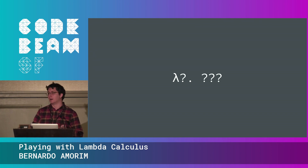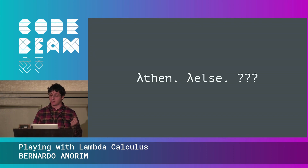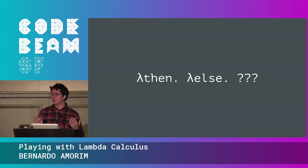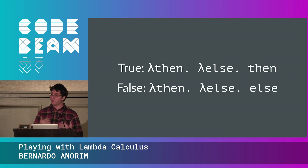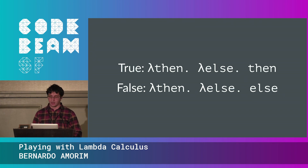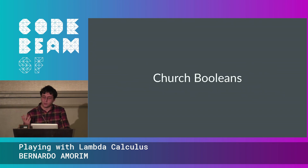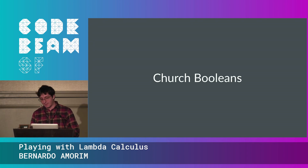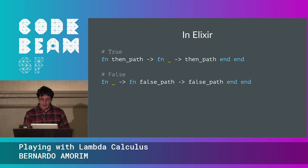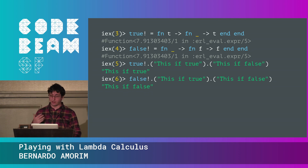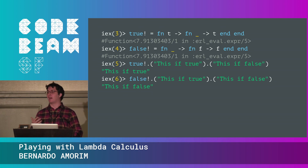We normally use booleans for branching — picking one of two paths in an if-then-else. Since everything is a function, a boolean can be a function that receives two things — the 'then' and the 'else' branch — and chooses one. So 'true' is encoded as a function that receives two things and returns the first one, and 'false' returns the second one. These are called Church booleans. In Elixir, calling 'true' with two arguments picks the first; 'false' picks the second.